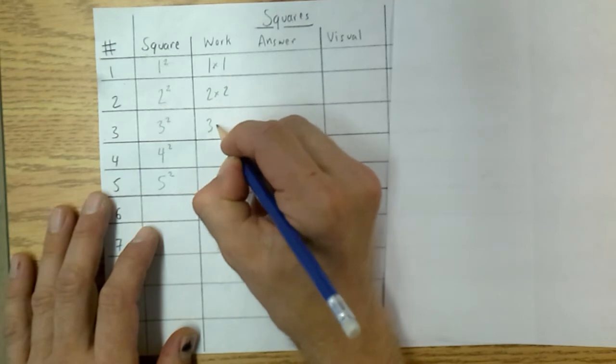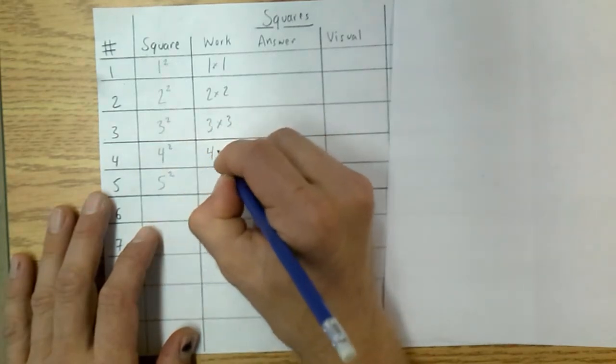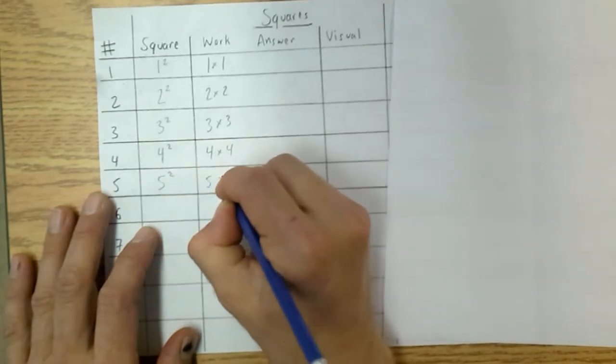3 squared, same thing. 3 multiplied by itself. 4 squared, 4 multiplied by itself. 5 squared, same thing.